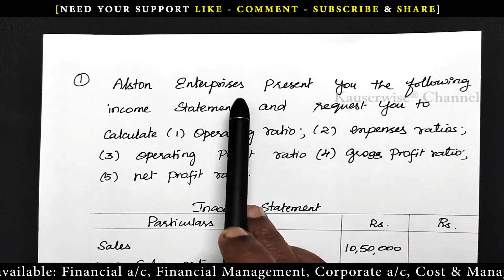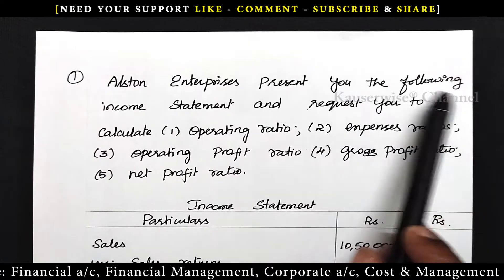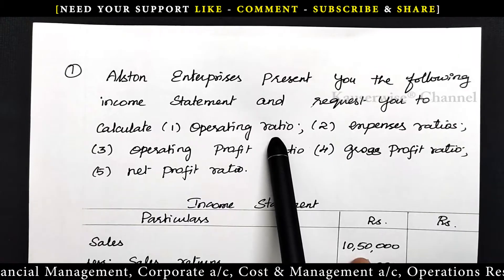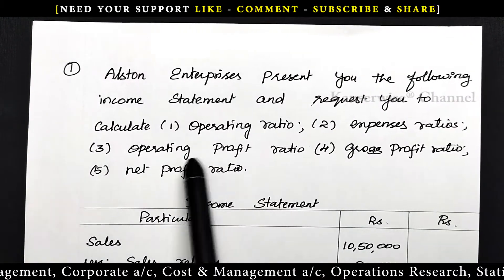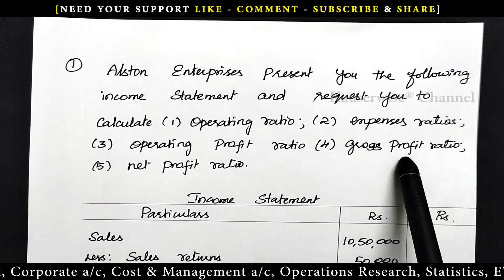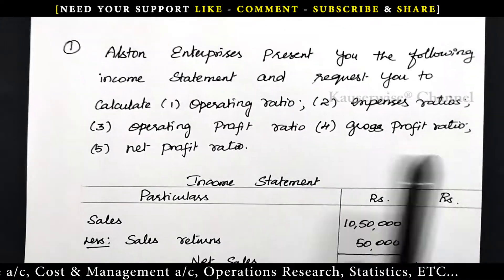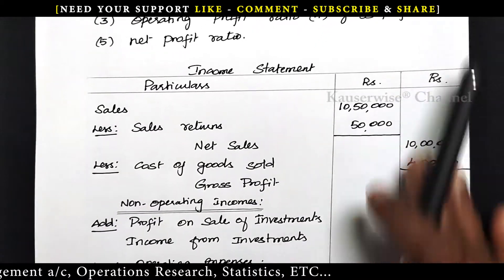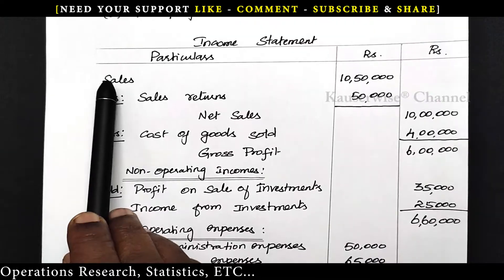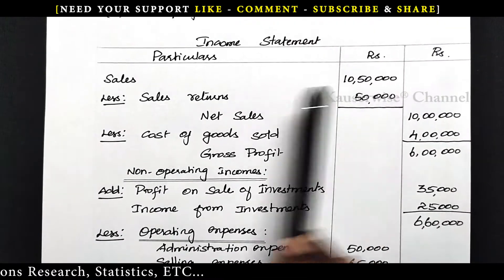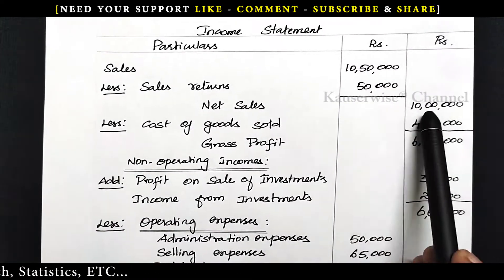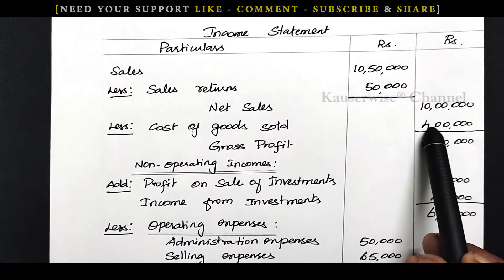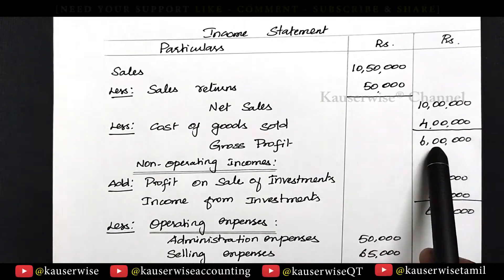Alston Enterprises presents you the following income statement and requests you to calculate operating ratio, expenses ratios, operating profit ratio, gross profit ratio and net profit ratio. In the income statement, they started with sales: 10 lakh 50,000 minus sales returns 50,000, giving net sales of 10 lakhs. Less cost of goods sold 4 lakhs, balance 6 lakhs — this is gross profit.